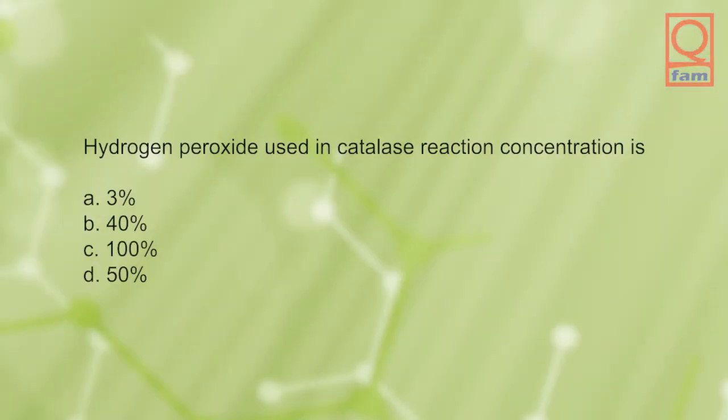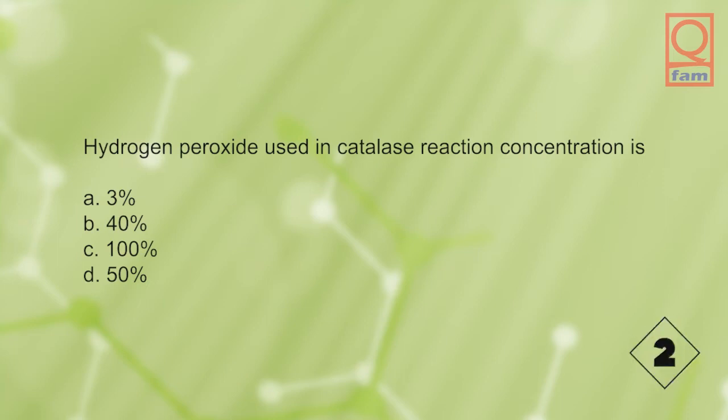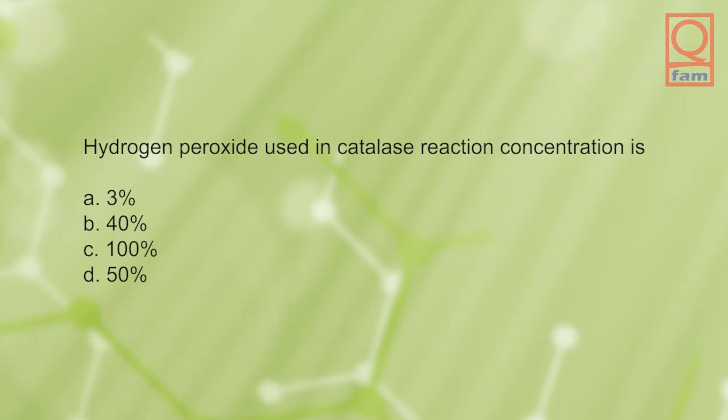Hydrogen peroxide used in catalase reaction concentration is: A) 3%, B) 40%, C) 100%, D) 50%. The answer is A, 3%.